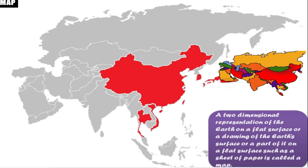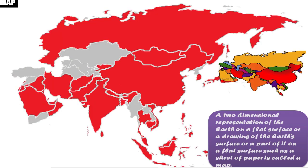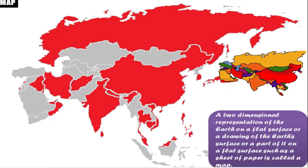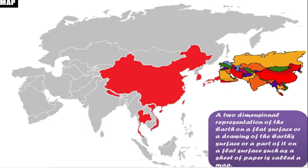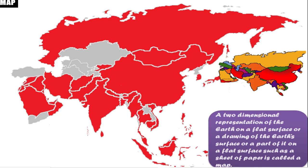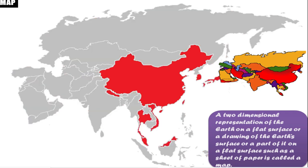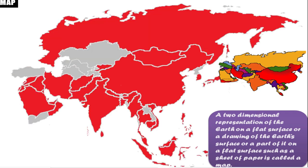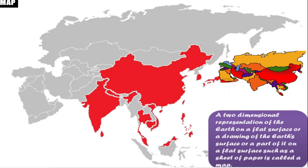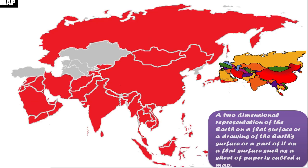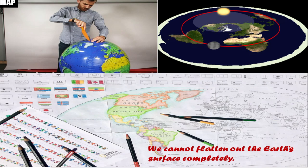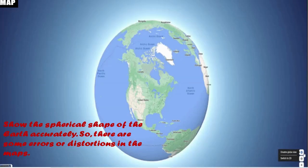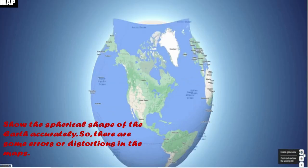For example, if you only want to know about Asia, you can draw a map of Asia. Such a drawing on a sheet of paper is called a map — a two-dimensional representation of the earth or a part of it on a flat surface such as a sheet of paper.